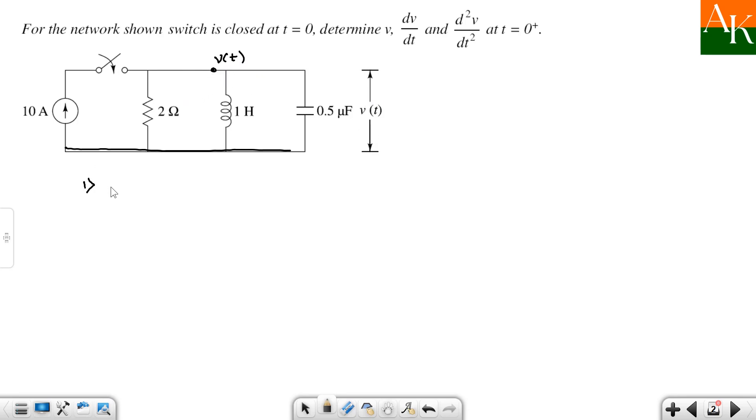You have to analyze the circuit at three instances. First, at t equals 0 minus, the switch is open and the current is not flowing through this one. Second, analyze at t equals 0 plus and third one for t greater than 0. So we will proceed for the analysis of the circuit.